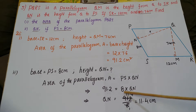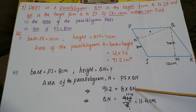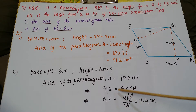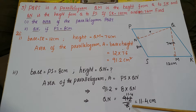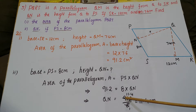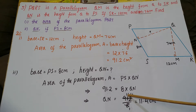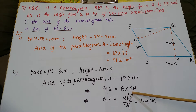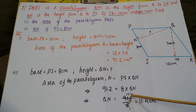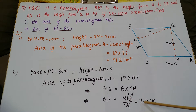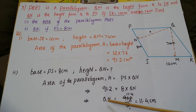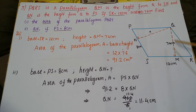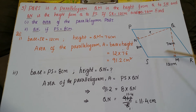So QN is equal to 91.2 divided by 8. Performing the division: 91.2 ÷ 8 gives 11.4 centimeters. So QN equals 11.4 centimeters. Here the altitudes QM and QN are from the same vertex Q to different bases.